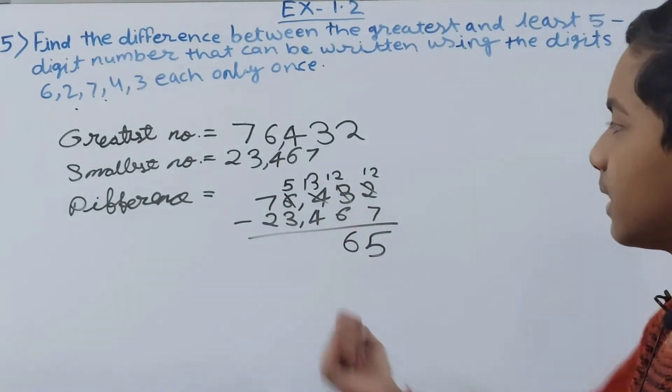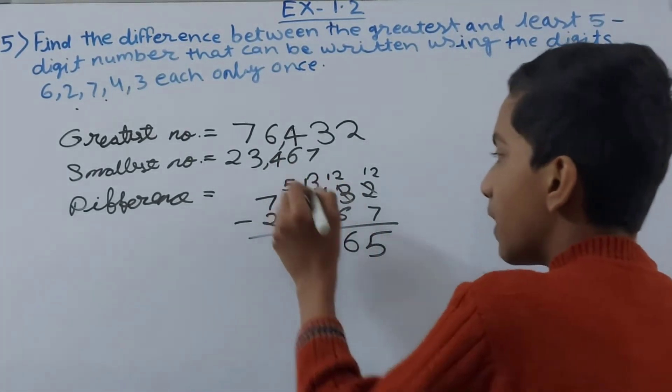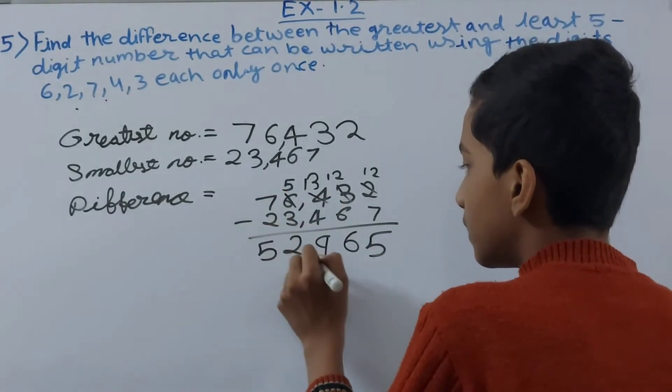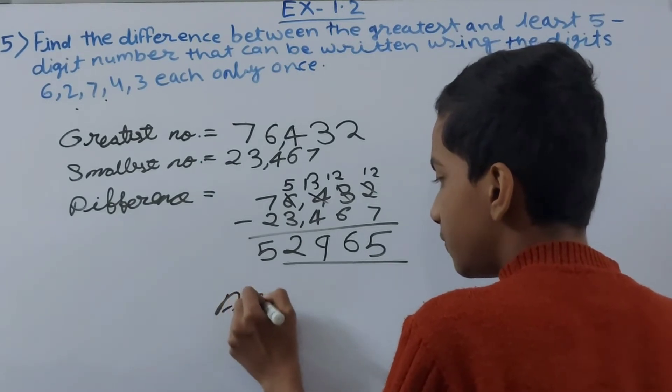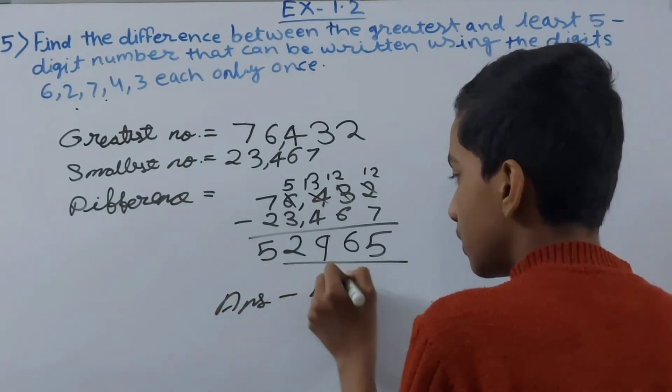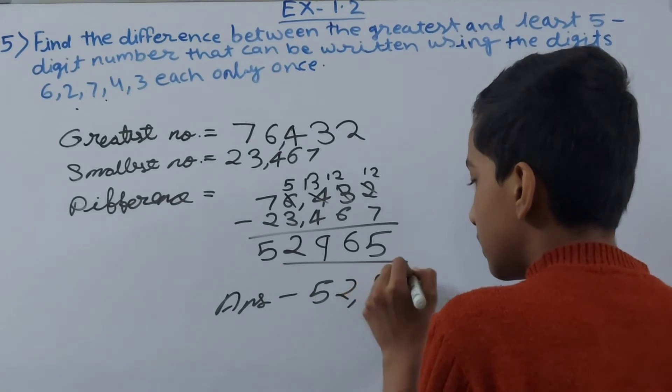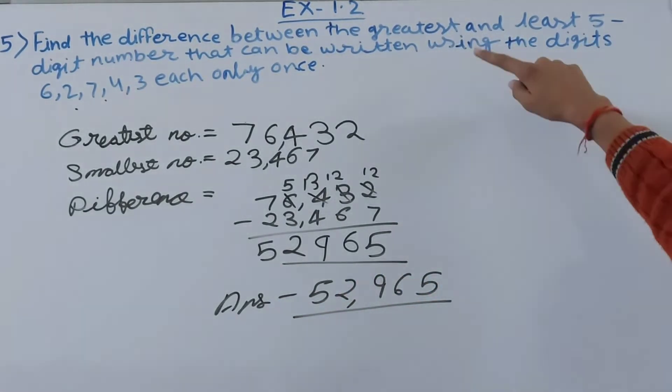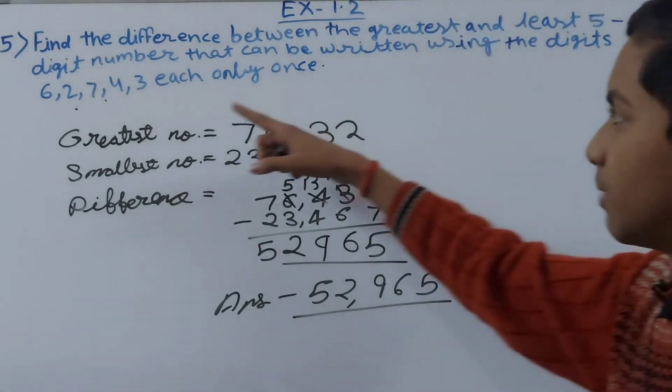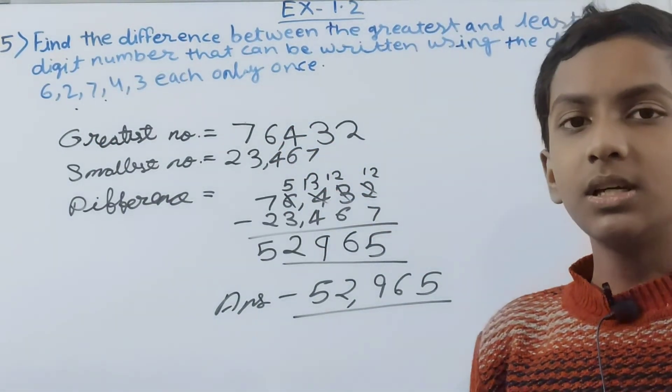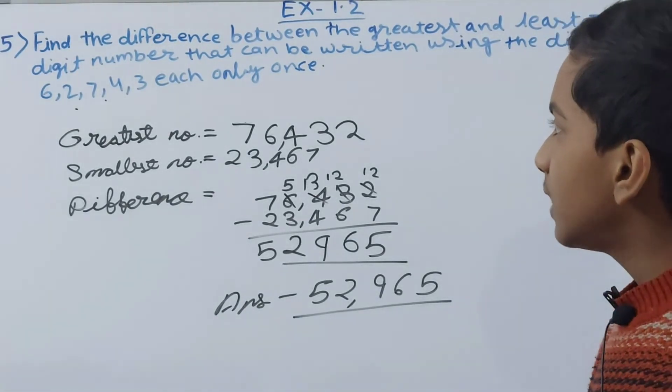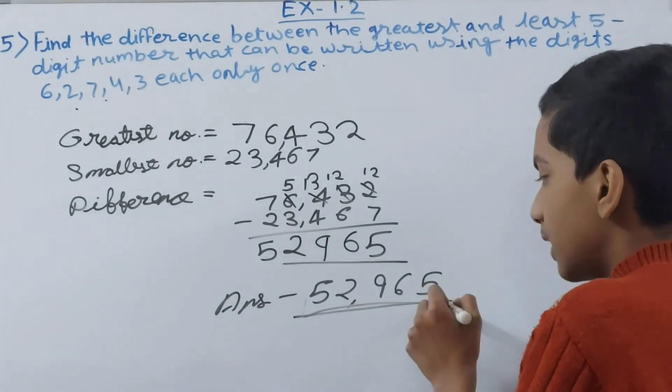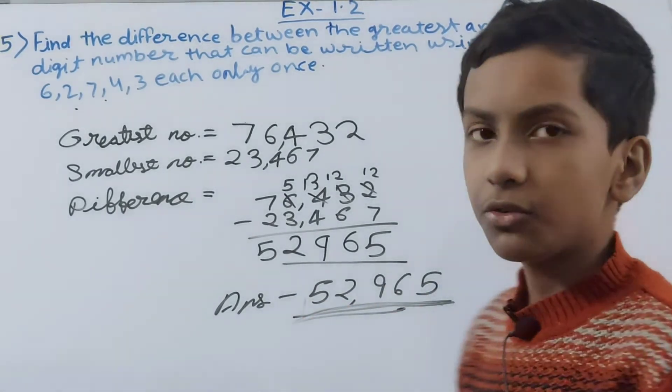5 minus 3 is 2. 7 minus 2 is 5. So the answer becomes 52965. So that means the difference between the greatest and the least 5 digit number that can be formed using 6, 2, 7, 4, 3 is 52965.